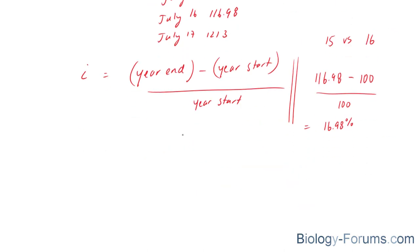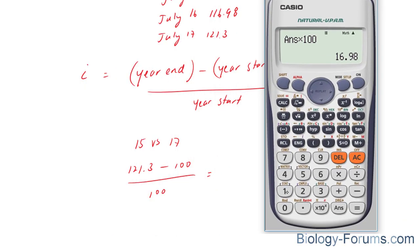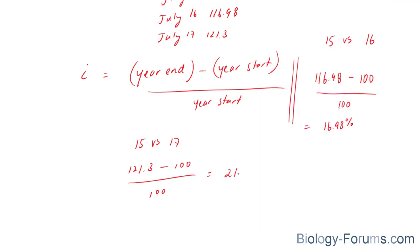Let's do the years '15 versus '17. The price index for 2017 was 121.3 minus 100 over 100. And we end up with 121.3 minus 100 over 100 is equal to a jump of 21.3% in living costs.